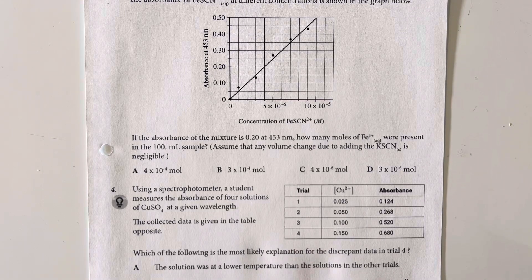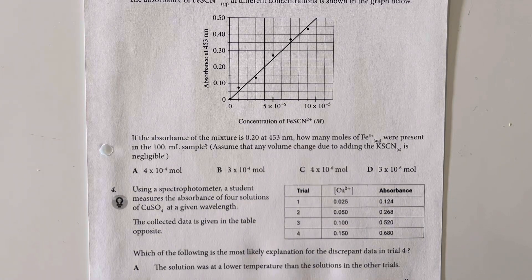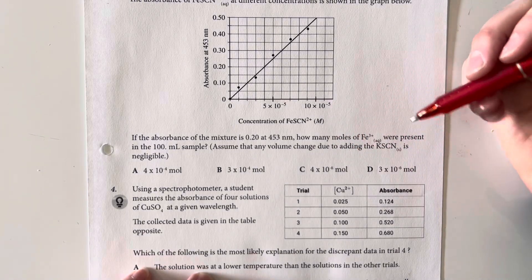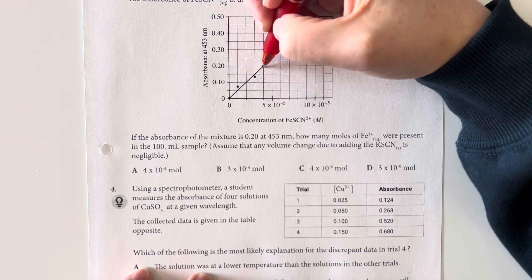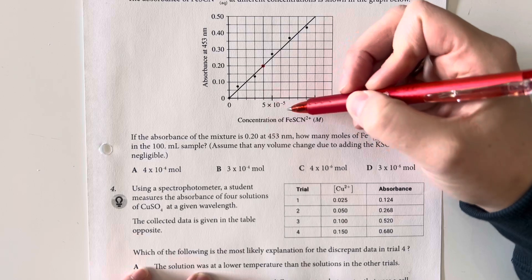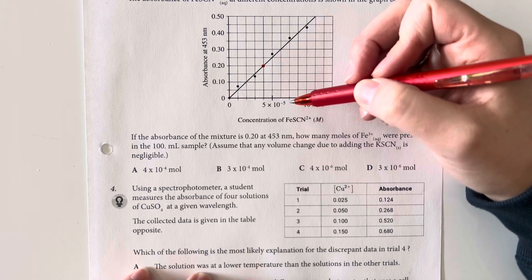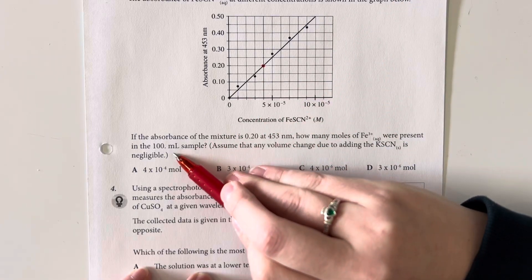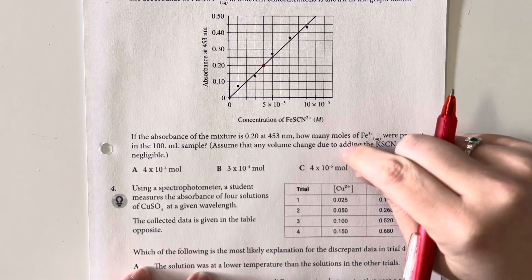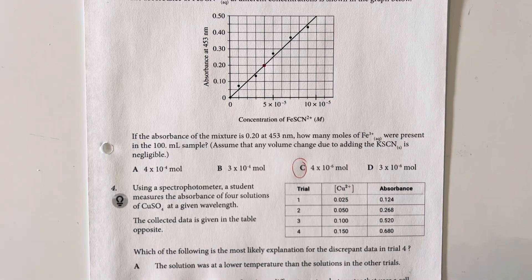If the absorbance of the mixture is 0.2 at 453 nanometers, how many moles of the iron 3 are present in the 100 milliliter sample? So we are looking at 0.2. And so we are, each of these is going to be 1. So this is 4 times 10 to the negative 5th, and it is per 100 moles. So we are going to, since molarity is moles per liter and that's what this is currently in, we need to move the decimal over one more time. So it is going to be 4 times 10 to the negative 6th moles of the iron 3.